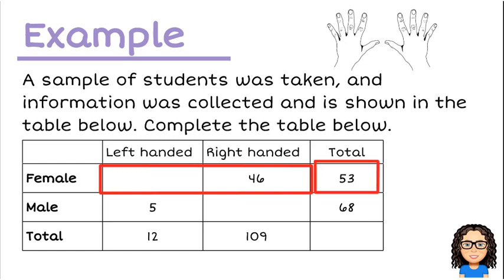So if I have 46 right-handed females and a total of 53 females, then that tells me I must have 7 females who are left-handed. Because 7 plus 46 equals 53.